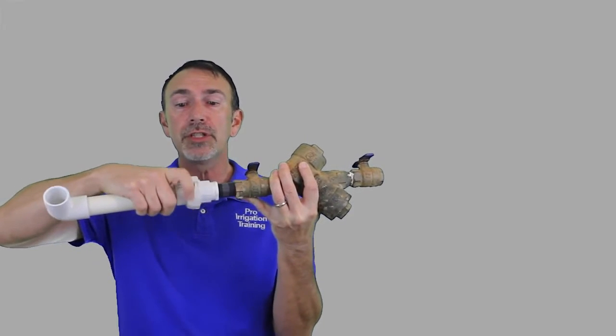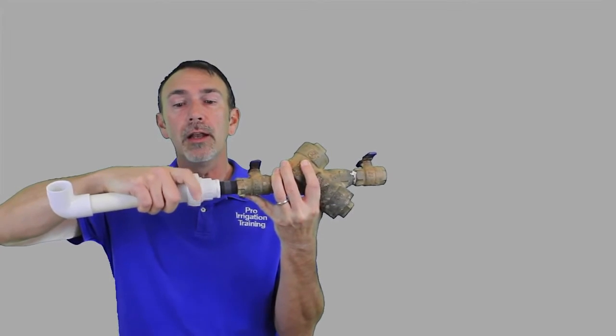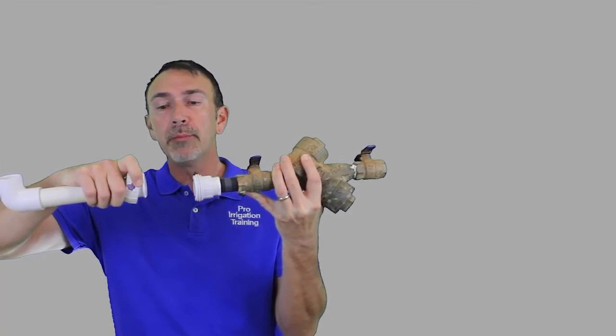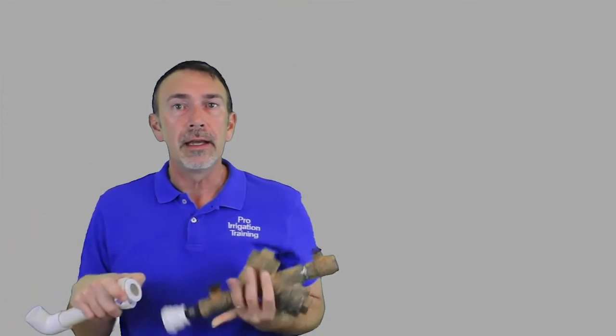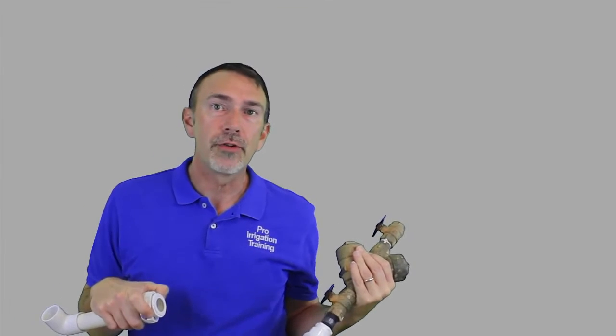For instance here, if you see this union, it's just got a locking collar here, and then it pulls apart, and you can pull this right up out of its fitting, and then put it in the garage for the winter, bring it back out next spring, and put it in.